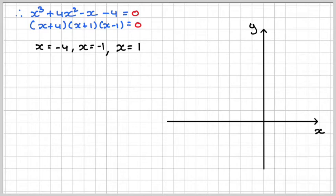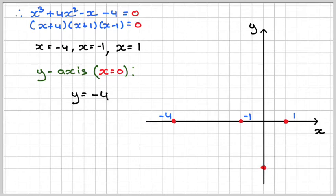We'll also have a set of axes. Label the axes. I'm going to mark on here minus 4, minus 1, and 1. For the y-axis, that's quite straightforward, because if x equals 0, you're just left with minus 4. So it goes through the point here at minus 4.